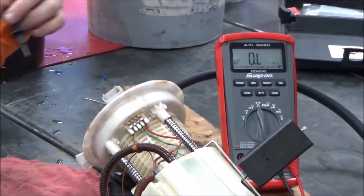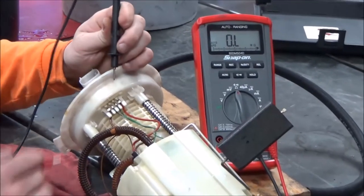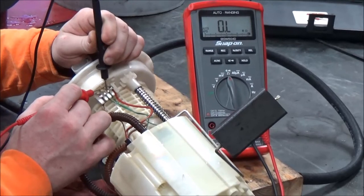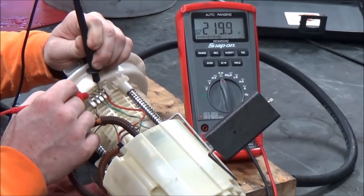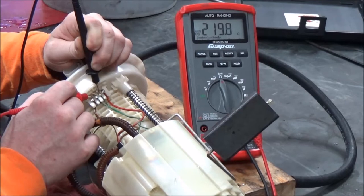The float is all the way down, which simulates an empty tank. We've already zeroed our meter. In the empty position, we have 220 ohms.